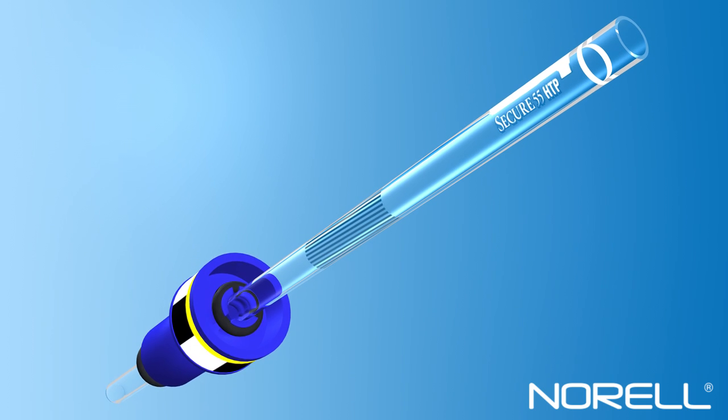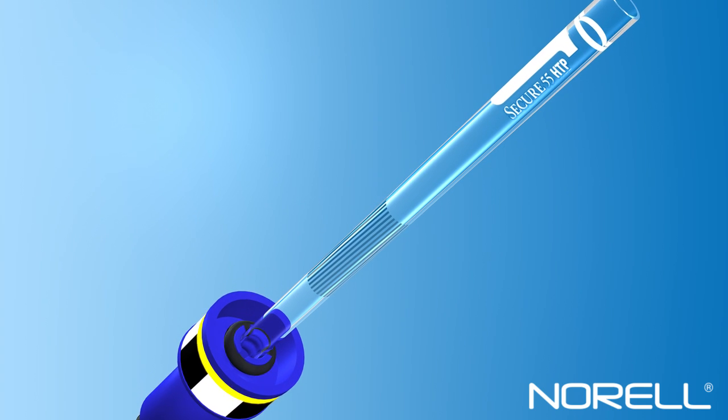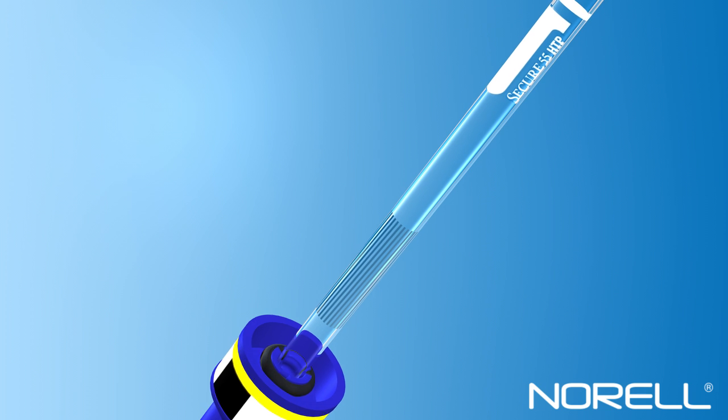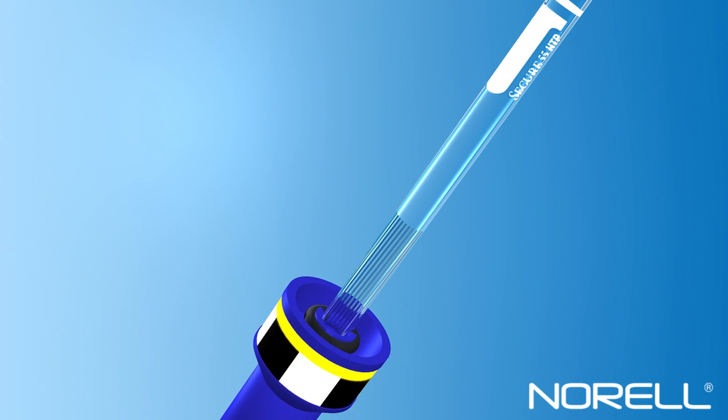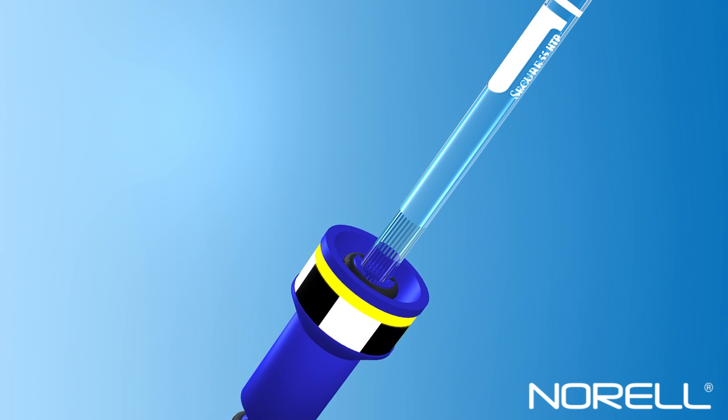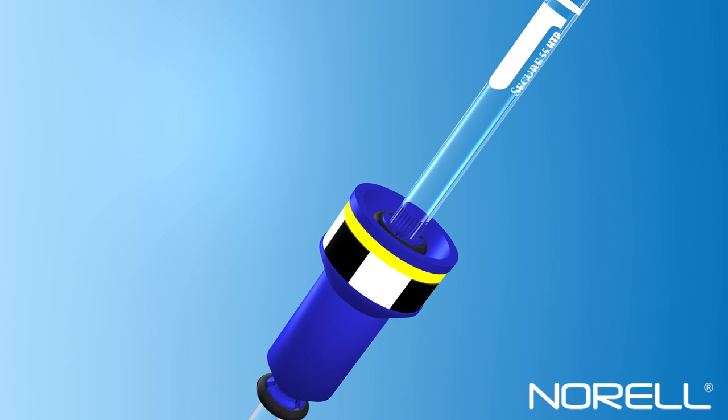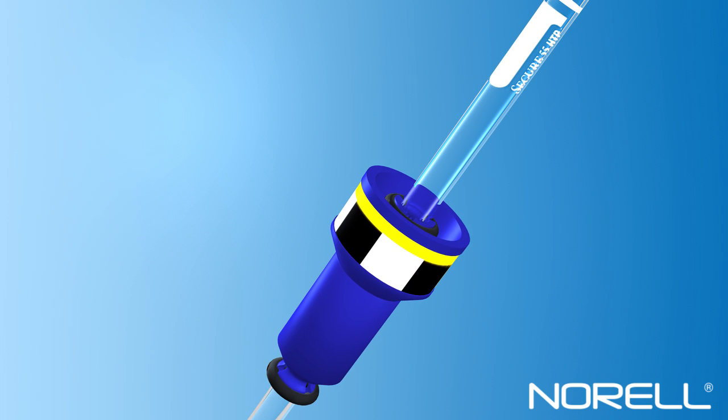When inserted to the maximum extent permitted by the depth gauge, the textured surface treatment on the NMR tube will coincide with the upper O-ring of the turbine, providing a non-slip surface at the point of contact.